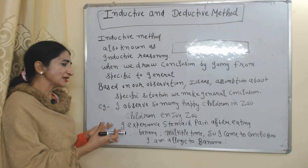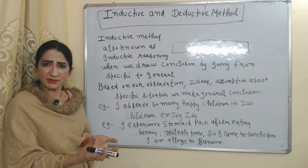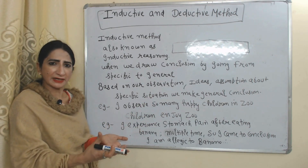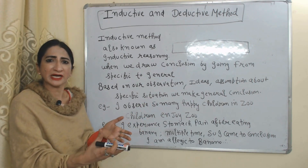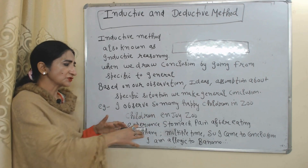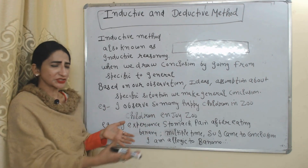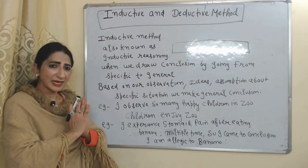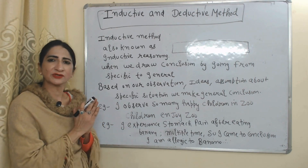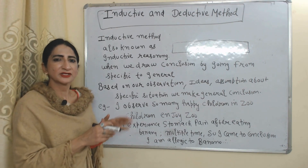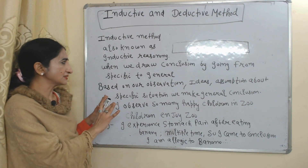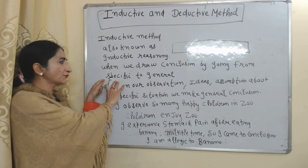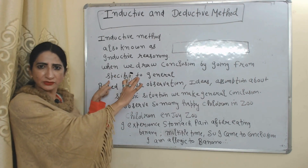Similarly, I experienced a stomach ache after eating a banana many times. Based on my observation, I came to one conclusion: I am allergic to banana. So here we can see we draw conclusions by going from specific to general.